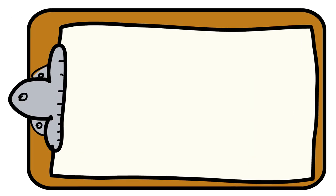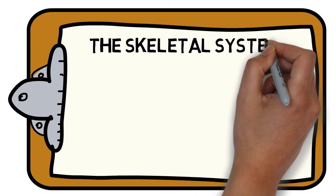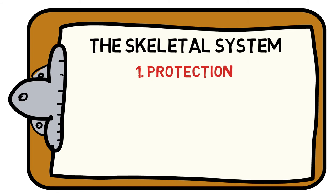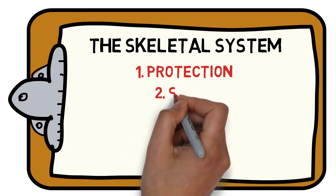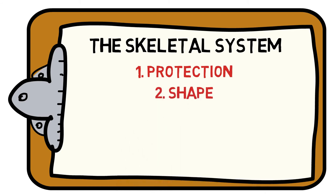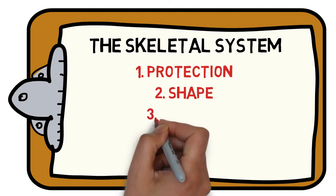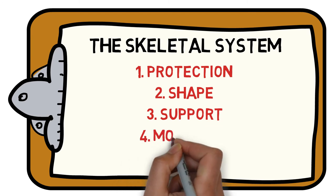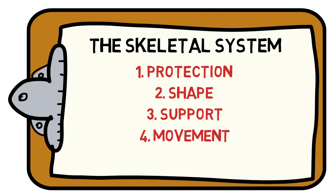Collectively, the whole skeletal system provides a number of different functions: protection to our vital organs such as our rib cage or skull; our distinctive shape and a framework for muscles and soft tissues to attach to; keeping our organs in place whilst we move and keeping us upright; allowing for all human movement using bones as levers when acted on by muscles; and production of red and white blood cells in our bone marrow.